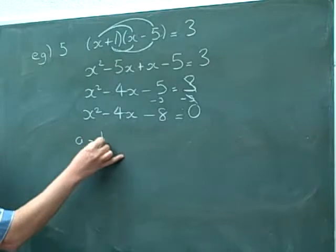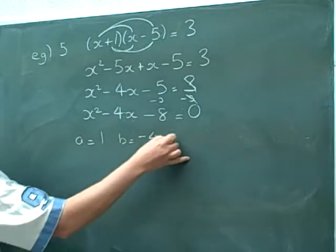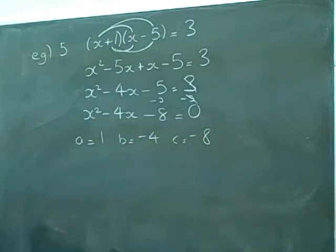And now it's the same as you're used to. a is 1, b is negative 4, c would be negative 8. And continue with the methods that you've been using.